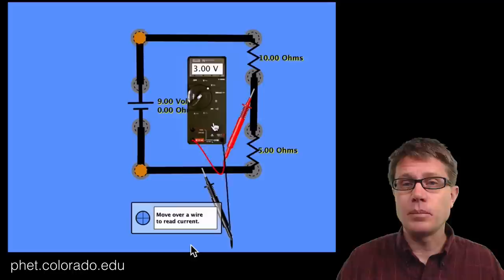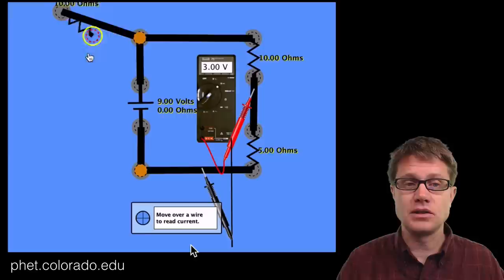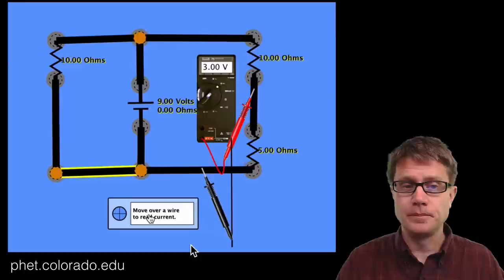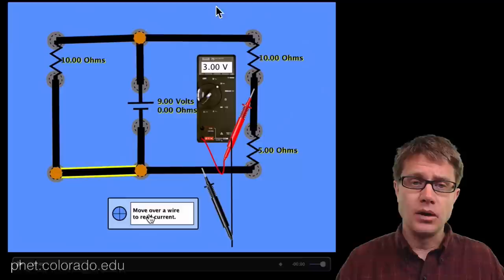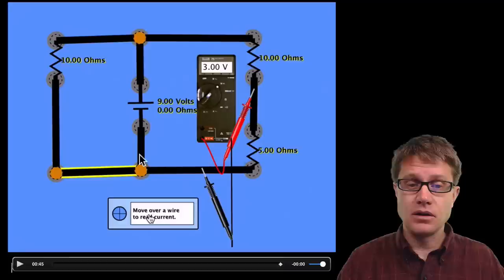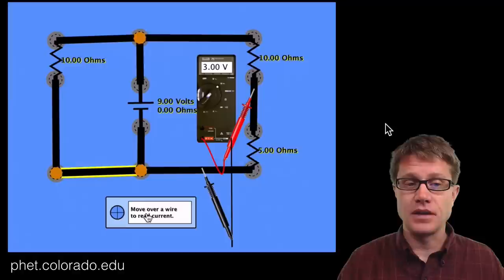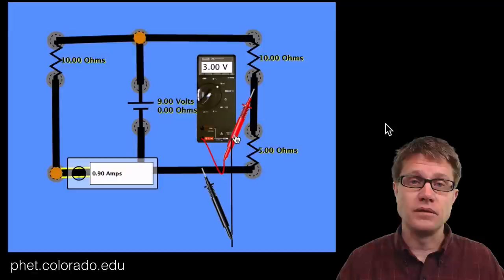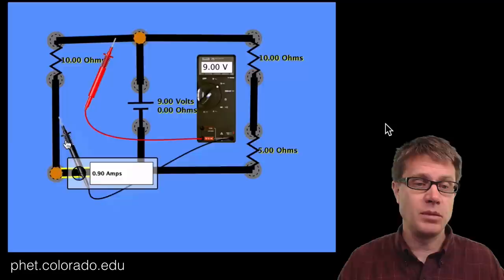What would happen if we make it a parallel circuit by adding a 10 ohm resistor on the other side? Using the roller coaster analogy, we have 9 volts of potential energy at the top and 0 volts when we get back. So the voltage drop across that parallel branch must be 9 volts, and the current is going to be 0.9 amps. We can verify that with our ammeter and voltmeter — we get a 9 volt drop across it.